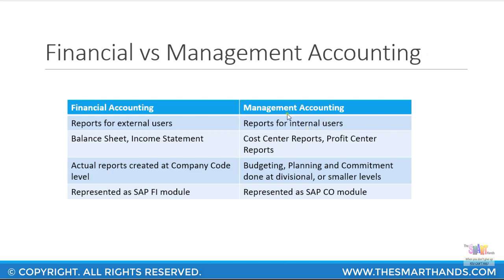Management accounting creates reports for internal users within your organization — your managers, finance managers, CEOs, and so on. In financial accounting, the three primary financial statements are the balance sheet, income statement, and cash flow statement. In management accounting, your primary reports are cost center reports, profit center reports, product costing reports, and profitability analysis reports — providing a more detailed view within your organization.